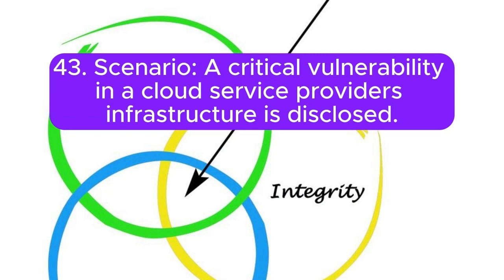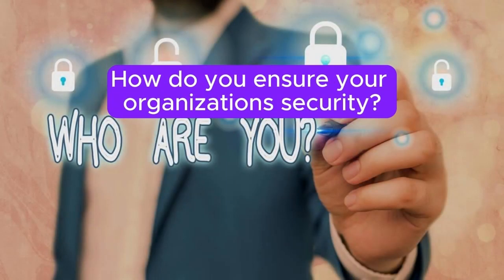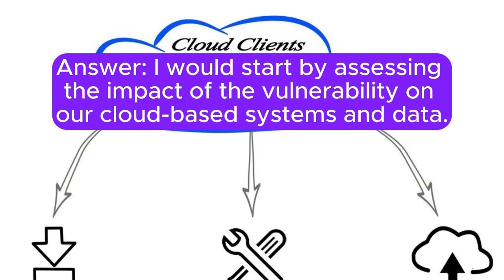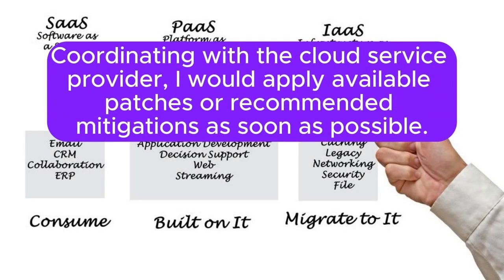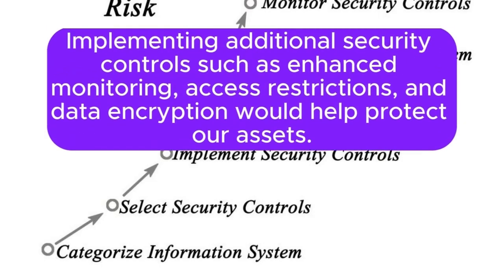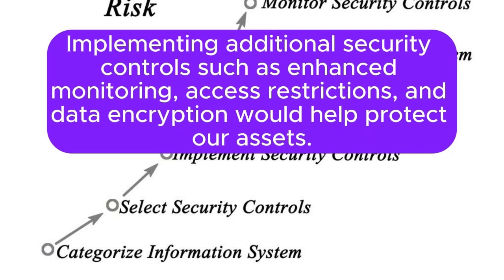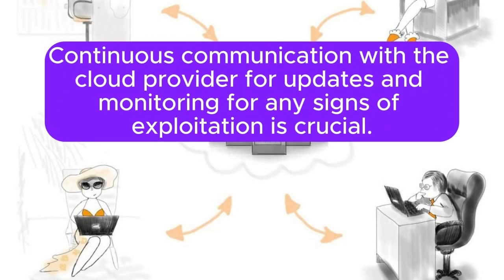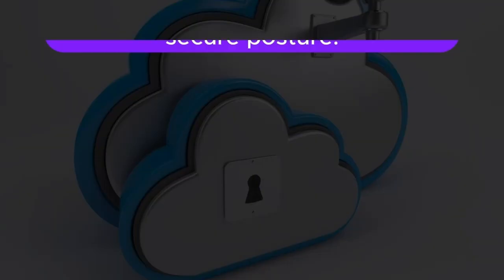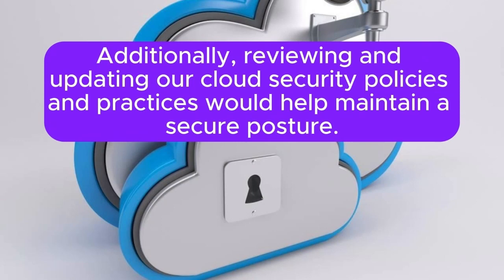Scenario 43: A critical vulnerability in a cloud service provider's infrastructure is disclosed. How do you ensure your organization's security? I would start by assessing the impact of the vulnerability on our cloud-based systems and data. Coordinating with the cloud service provider, I would apply available patches or recommended mitigations as soon as possible. Implementing additional security controls such as enhanced monitoring, access restrictions, and data encryption would help protect our assets. Continuous communication with the cloud provider for updates and monitoring for any signs of exploitation is crucial. Additionally, reviewing and updating our cloud security policies and practices would help maintain a secure posture.